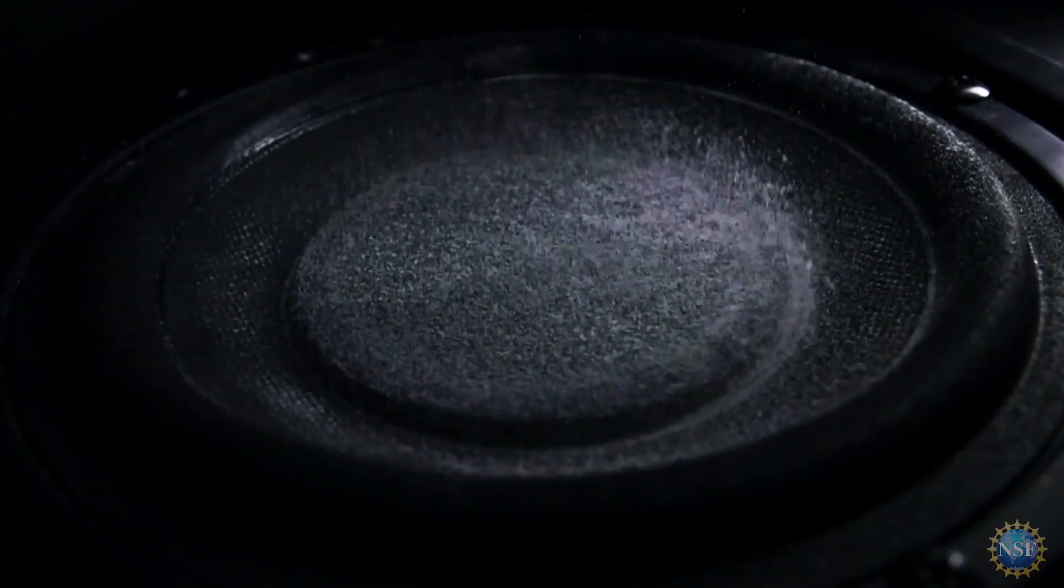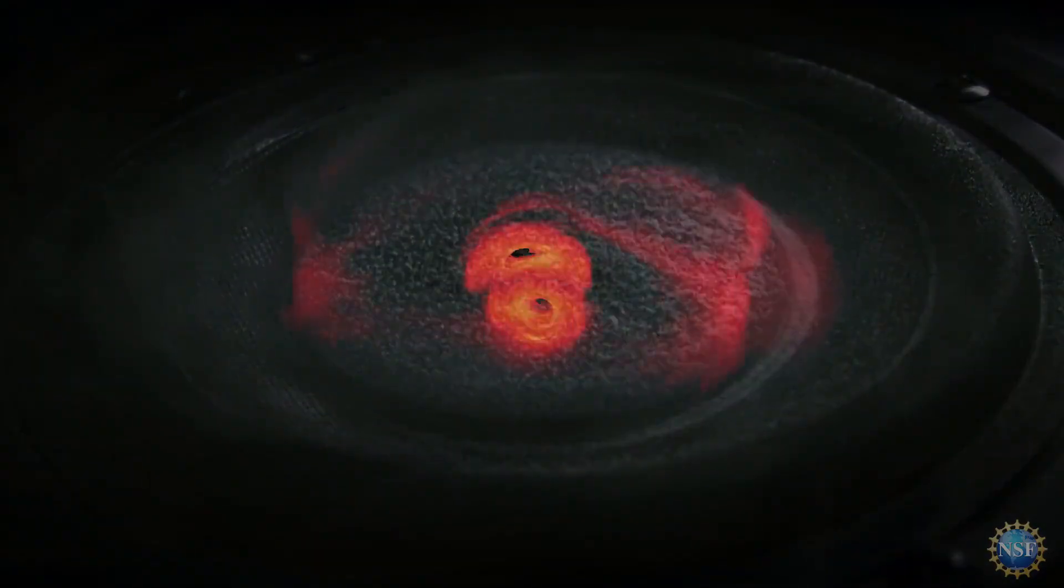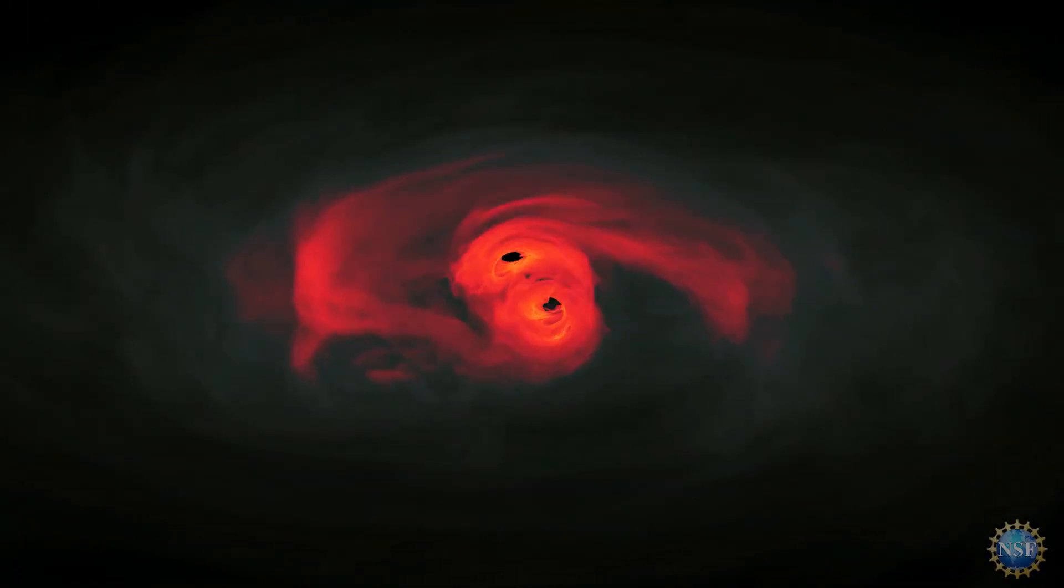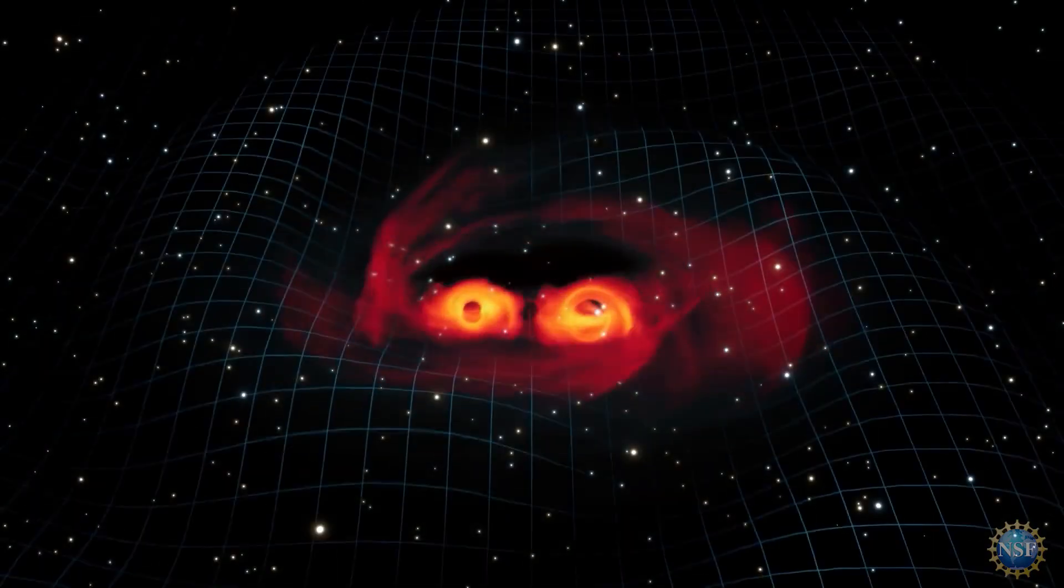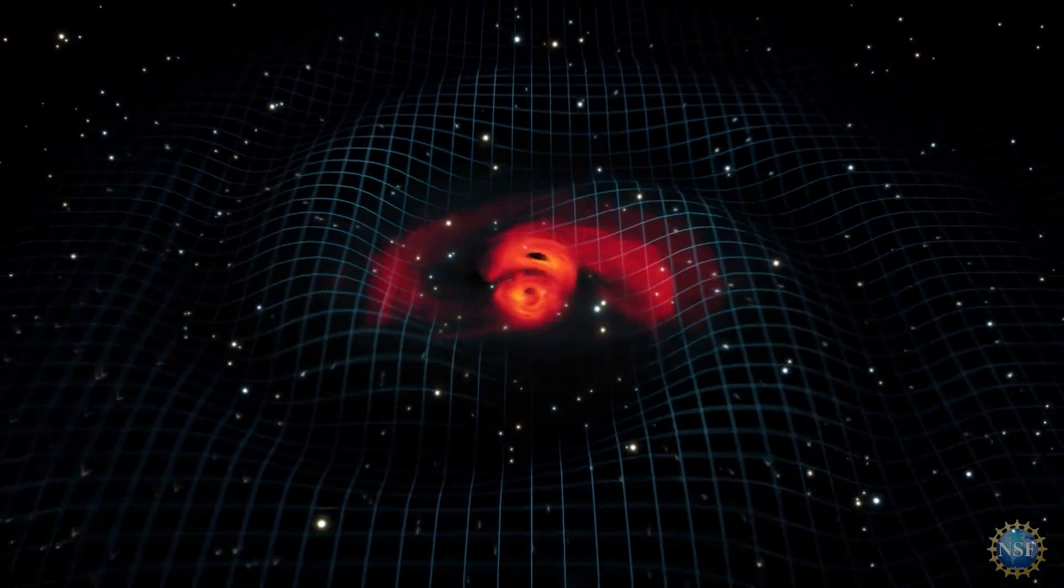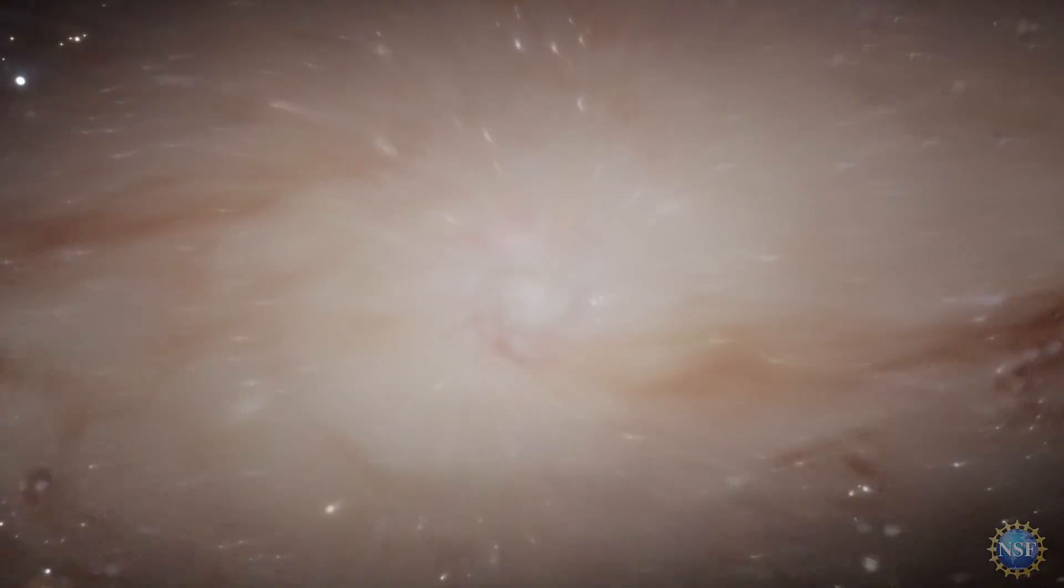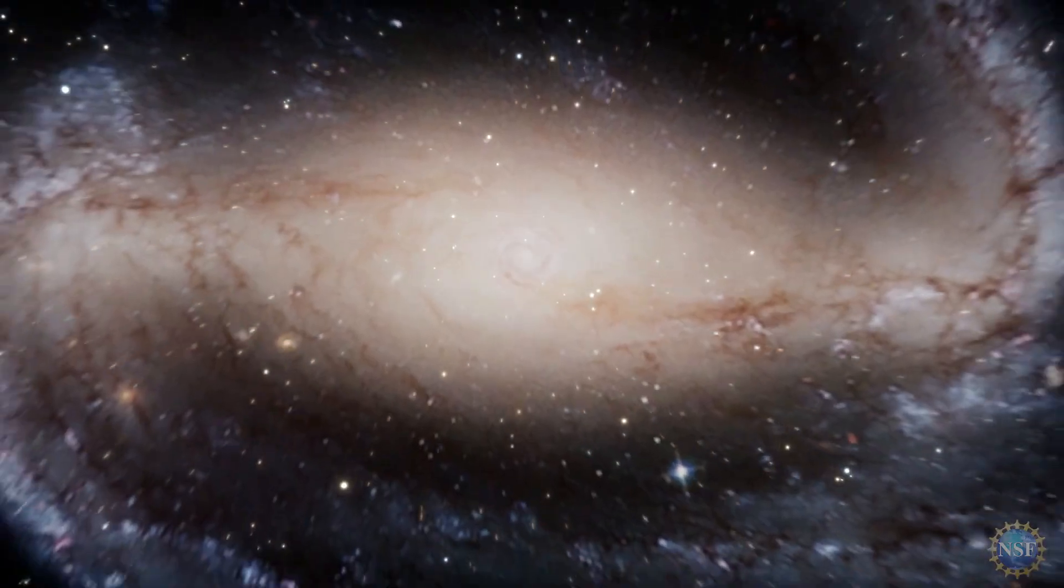Just as sound waves are vibrations of air molecules, gravitational waves are vibrations in the fabric of space-time. When two massive black holes spiral toward each other, they produce gravitational waves that travel through the cosmos at the speed of light.